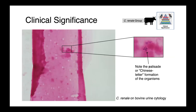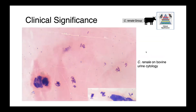In this cytological preparation from bovine urine, you can see a urinary epithelial cell that has desquamated with small club-like structures — these are the Corynebacterium organisms, forming that characteristic palisade or Chinese letter formation. Here's another image that's perhaps even clearer, showing club-shaped rods forming these palisade-like agglomerations.